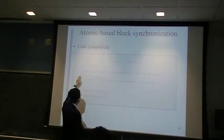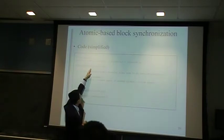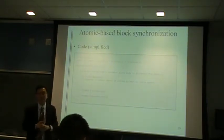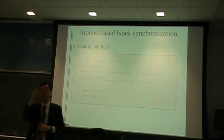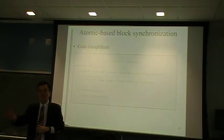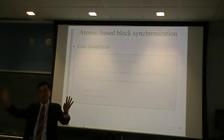Within each iteration, they're going to all iterate until the frontier size is zero. Because when the frontier size is zero, you have visited all the nodes — and that's the point where the breadth-first search is done. Then all the threads will exit.